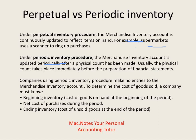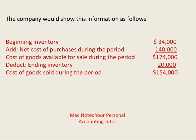To determine the cost of goods sold under the periodic system: start with beginning inventory, then keep track of all purchases during the year, and do a count at the end of the period to determine how much is left unsold. For example, a company with a beginning inventory of $34,000, net purchases of $140,000, had $174,000 available for customers. They count at year-end and have $20,000 left unsold, so they must have sold $154,000.